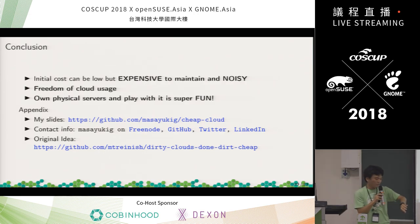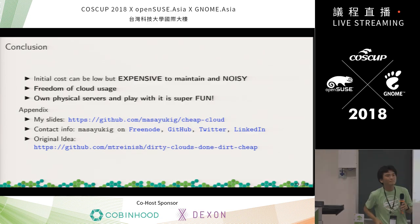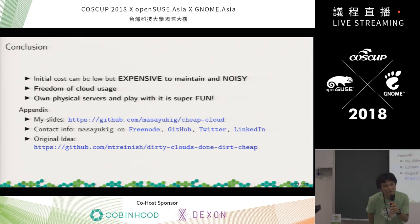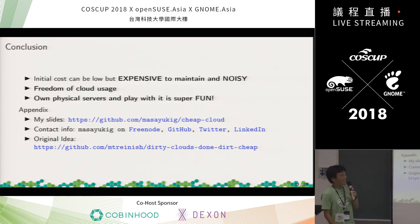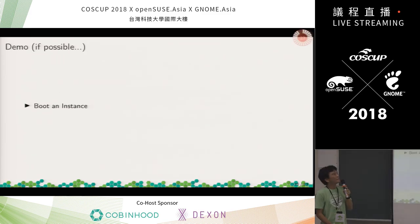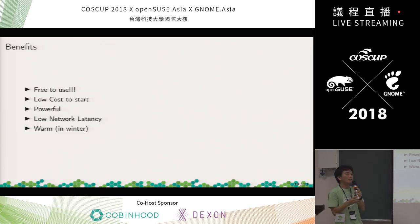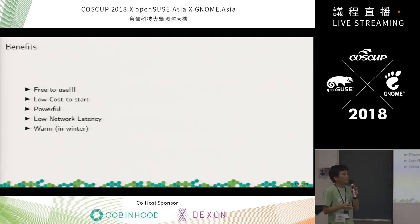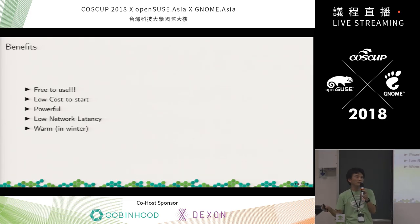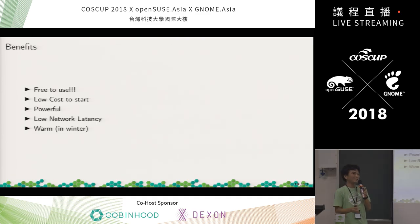Q: Is there a reason you bought three servers rather than two, four, or one? A: Good question. To understand cloud architecture, one server is not enough. Two servers might be enough, but I wanted to do live migration features, and for that, three is the ideal number.